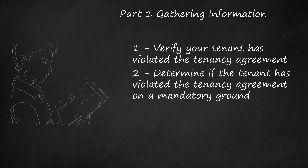Ground 1 states that the property is needed as the landlord's or the landlord's spouse's or civil partner's principal home. This ground also requires that you gave the tenant written notice before the tenancy began that repossession for this purpose might be required. Ground 2 states that a property is subject to a mortgage that came into effect before the current tenant began occupying the property and the mortgagees are repossessing the property. Ground 3 is used in cases where a dwelling was available as a holiday home within 12 months and the tenant was given written notice before the tenancy began that repossession for this purpose might be required. Ground 4 is used in cases where a property belongs to an educational institution and the tenancy term is no longer than 12 months, and the tenant was given written notice before the tenancy began that repossession for this purpose might be required.